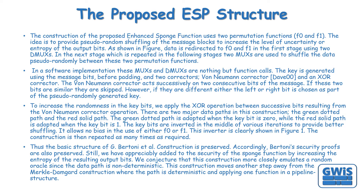There are two major data paths in this construction: the green dotted path and the red solid path. The green dotted path is adopted when the key bit is 0, while the red solid path is adopted when the key bit is 1. The key bits are inverted in the middle of various iterations to provide better shuffling, allowing no bias in the use of either F0 or F1. This inverter is clearly shown in Figure 1. The construction is then repeated as many times as required.